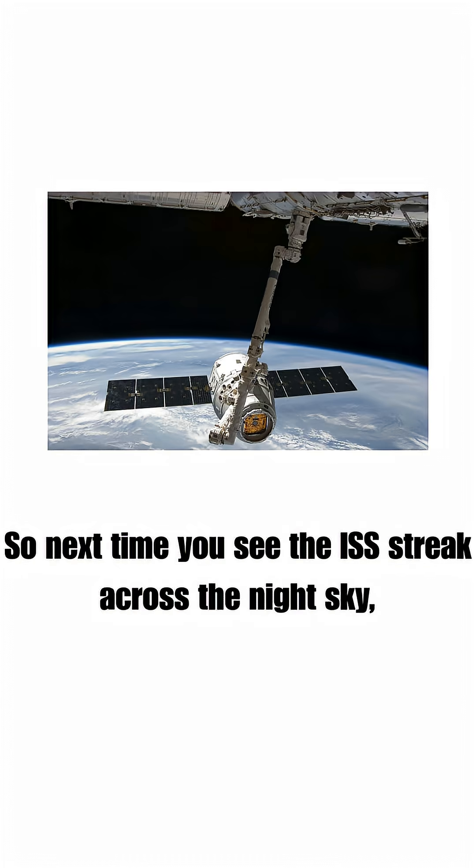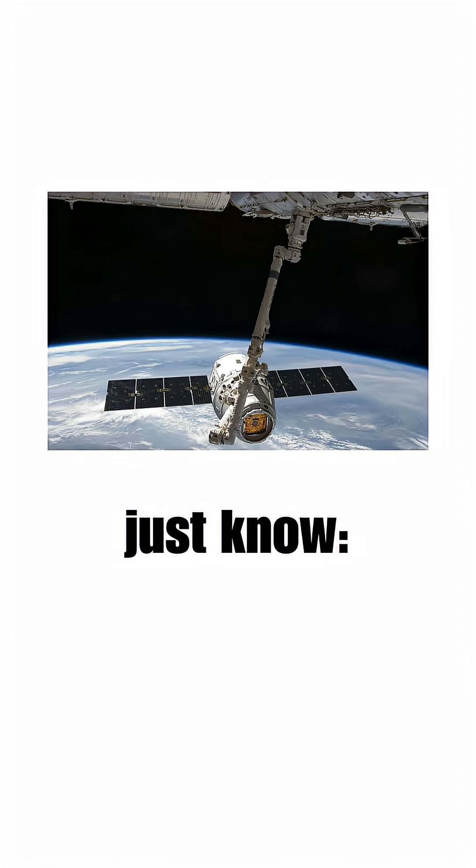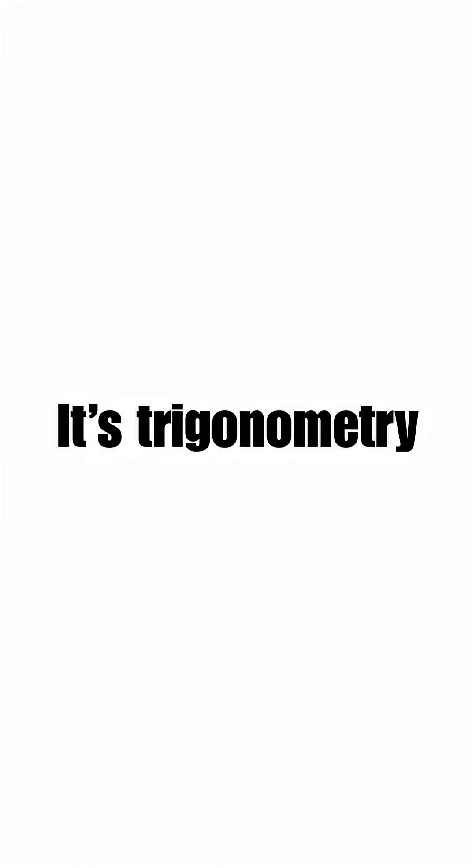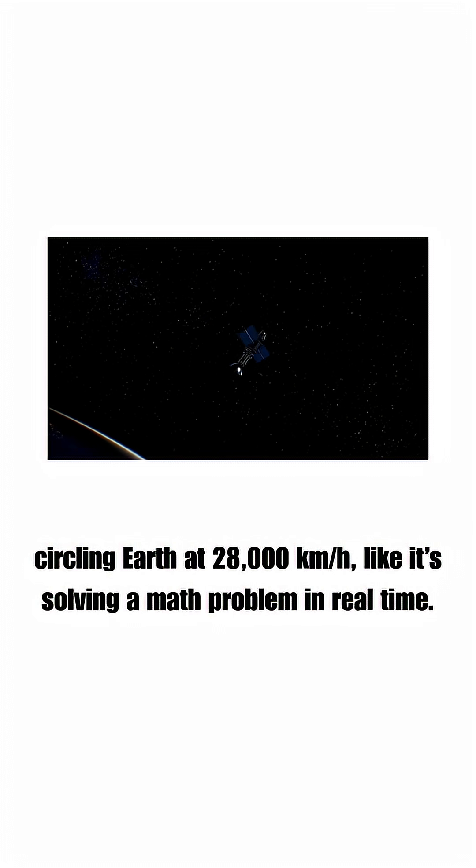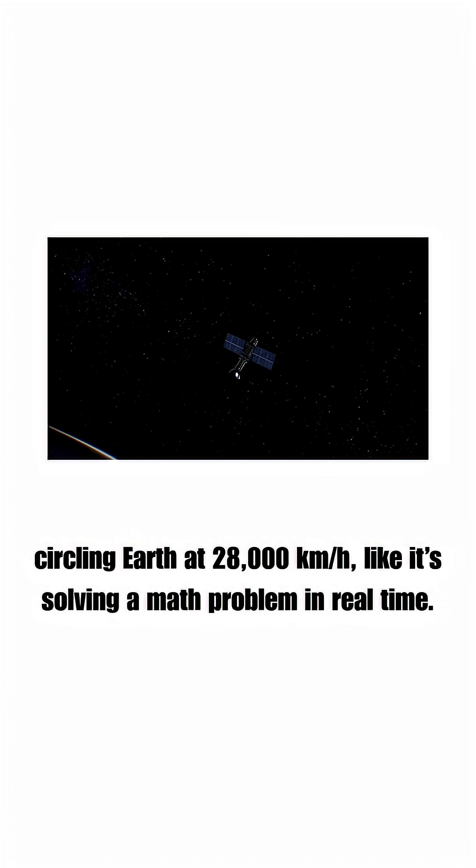So next time you see the ISS streak across the night sky, just know it's not just physics. It's trigonometry, circling Earth at 28,000 kilometers per hour, like it's solving a math problem in real time.